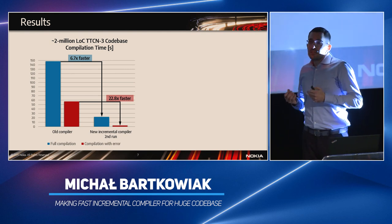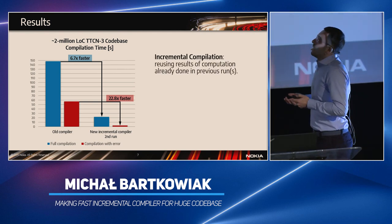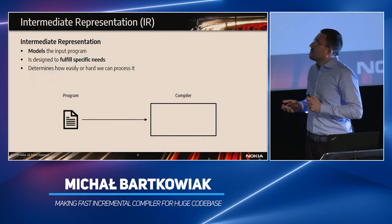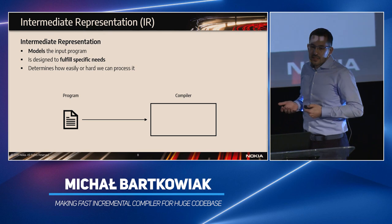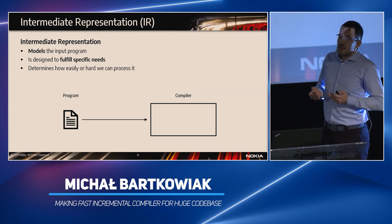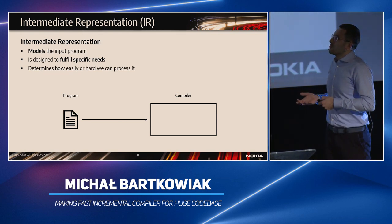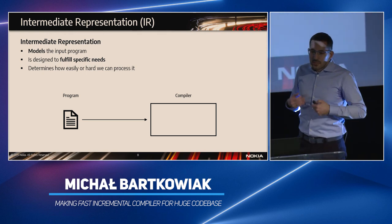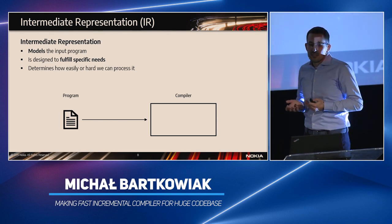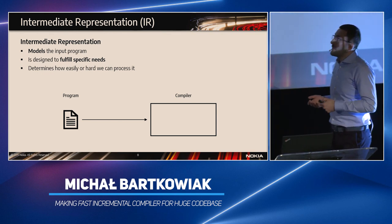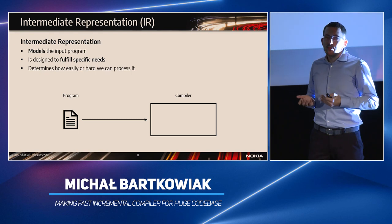Before we move on to the incremental compilation algorithm, we have to talk about the intermediate representation. The intermediate representation is a representation used inside a compiler — it's how the compiler models the input program. The source code of a program is naturally the input to the compiler, but the compiler usually chooses how to represent such programs, modeling the input program to fulfill specific needs.